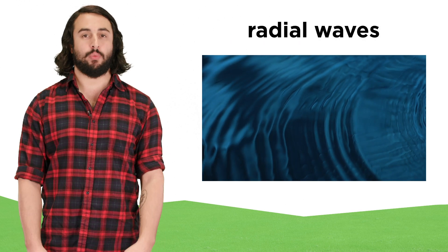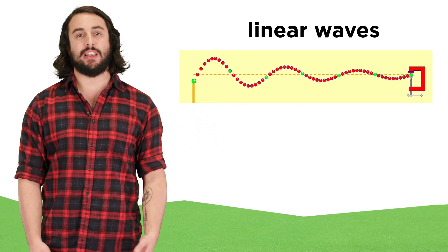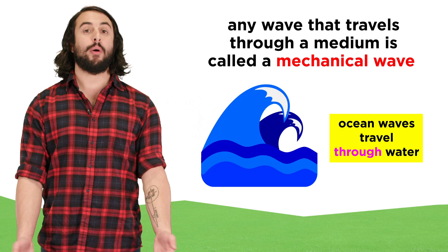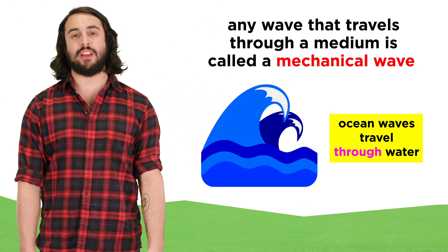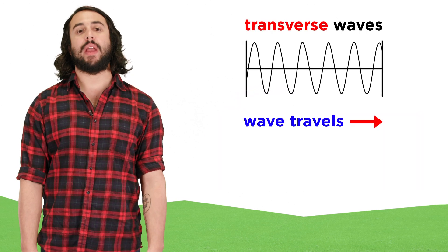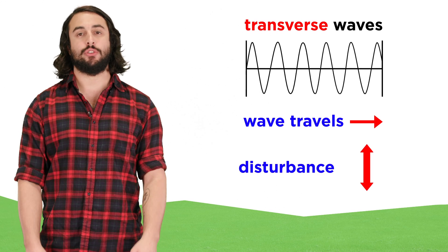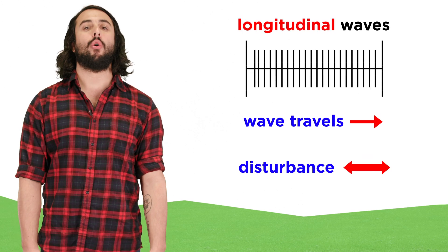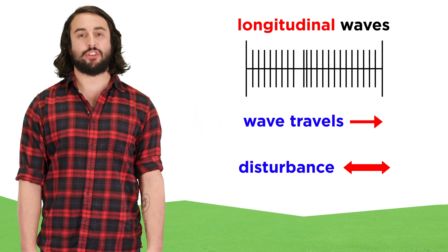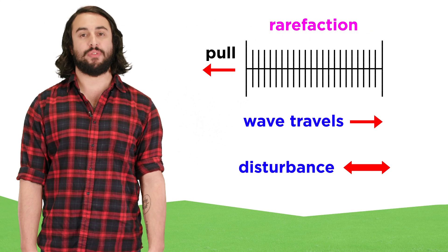Apart from the radial waves on the pond, waves can also be strictly linear, like if you shake a taut rope. In both cases, the wave is traveling through a material medium, so they are called mechanical waves. Mechanical waves can be transverse waves, where the disturbance is perpendicular to the direction the wave is traveling, or longitudinal waves, where the disturbance is parallel to the direction the wave is traveling, either by compression or rarefaction.